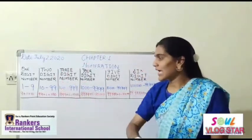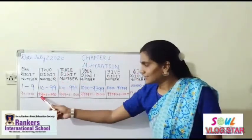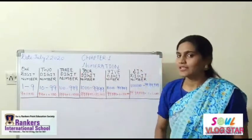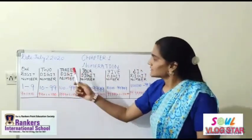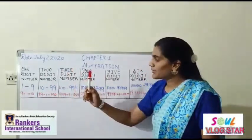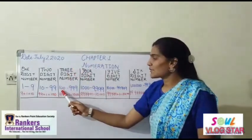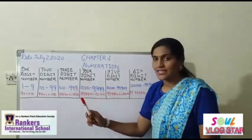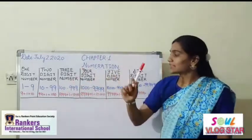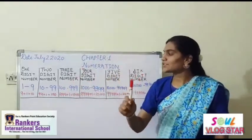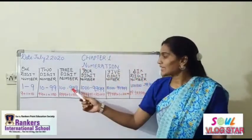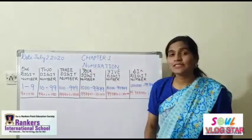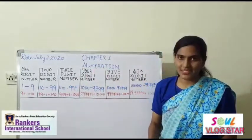If we add 1 to 99 it will become 100. Children, 100 is the three digit number. So three digit numbers start from 100 to 999. 100 is the smallest three digit number and 999 is the greatest three digit number.